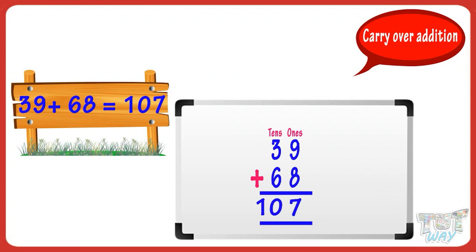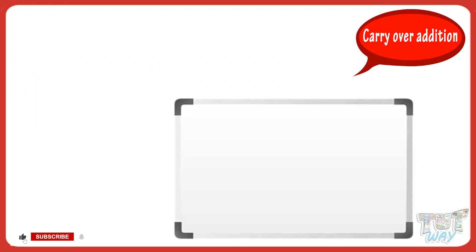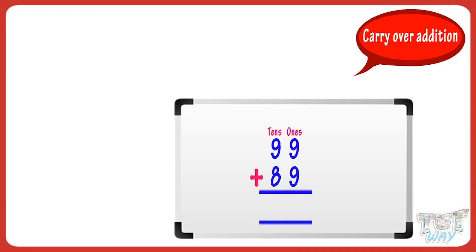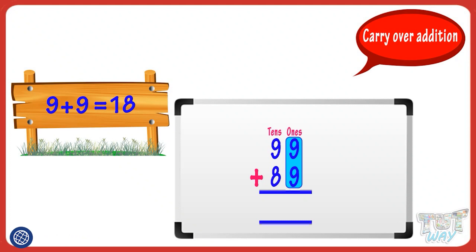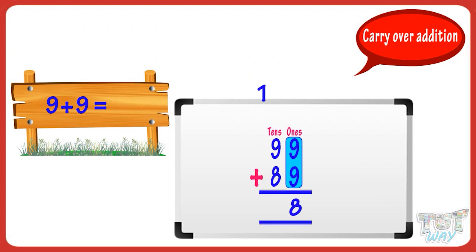Let's do some more sums for practice. First of all, we add the digits in the ones place. So add nine and nine — we get eighteen. Now how to write eighteen: write the digit in the ones place, that is eight, below the ones place digits in the sum. And carry over the tens digit and write it above the tens digit.